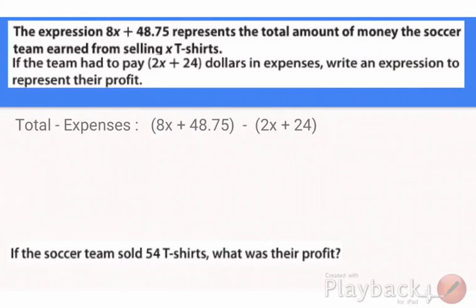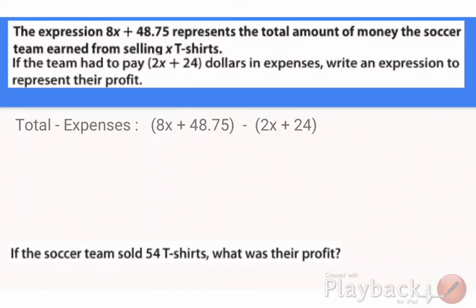Last but not least, a word problem. The expression 8x plus 48.75 represents the total amount of money the soccer team earned from selling x t-shirts. If the team had to pay 2x plus 24 in expenses, write an expression to represent their profit. So I set it up as total minus expenses: 8x plus 48.75 minus 2x plus 24. Now I take that minus and make it a negative 1, then distribute.